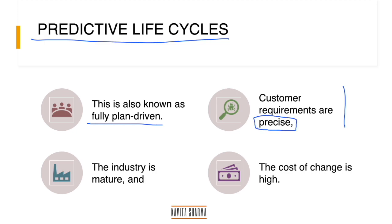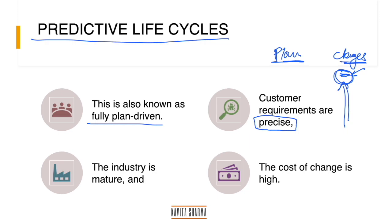Where can I use predictive? When customer requirements are precise — I plan first and I eliminate changes because if there are a lot of changes there's going to be a lot of problems. Think about Burj Khalifa: when it was being made it was supposed to be the tallest building, but by the time it was constructed it had become the second tallest. The team added something on top, which came with a lot of risk and rework.